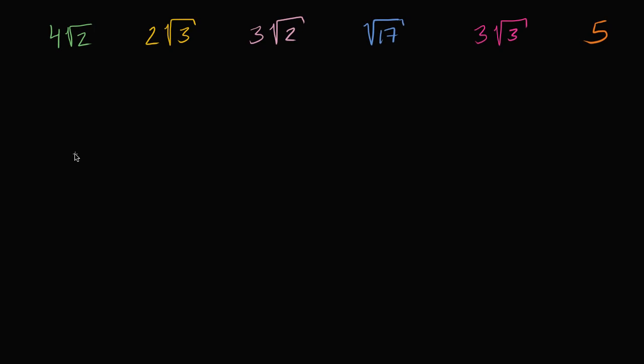So I'll give you a hint. It's very hard without a calculator. Square root of two is going to be one point something, square root of three is going to be one point something. How do we do this?